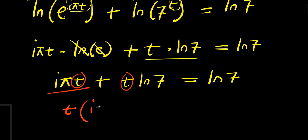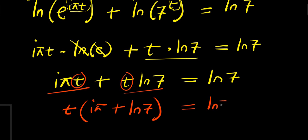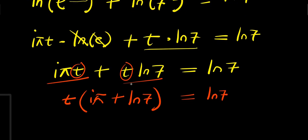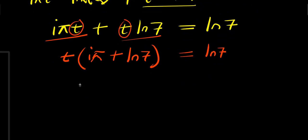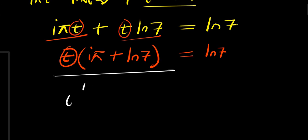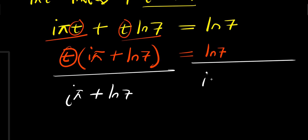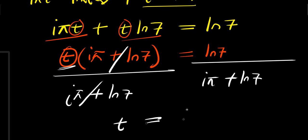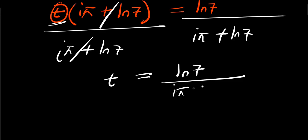So right now, what we are going to do will be to isolate this t. I can have t equals by dividing through. We divide this by i pi plus natural log of 7, and we divide this by i pi plus natural log of 7. Now, this is our solution.